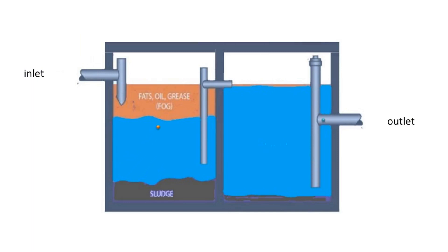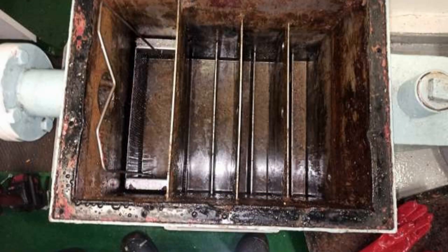The principle of a FOG grease trap involves the following steps. Inlet: wastewater containing fats, oils, grease, and FOG enters the grease trap through an inlet pipe. The trap is typically installed in galley areas where grease is commonly produced.